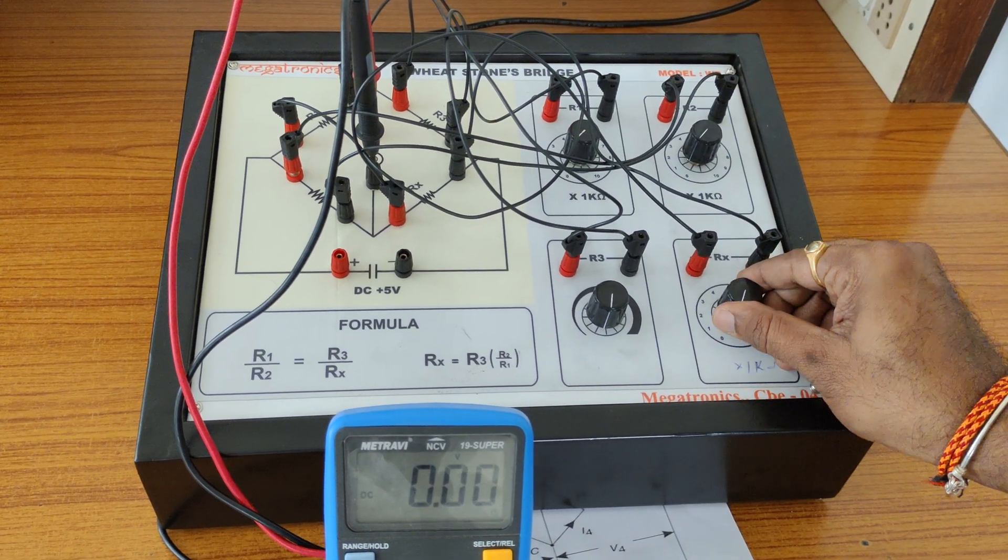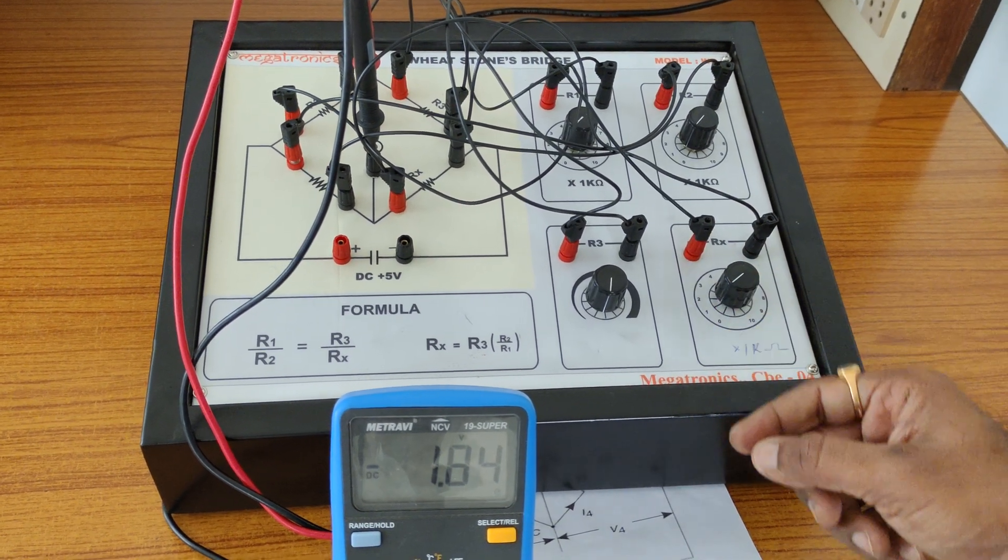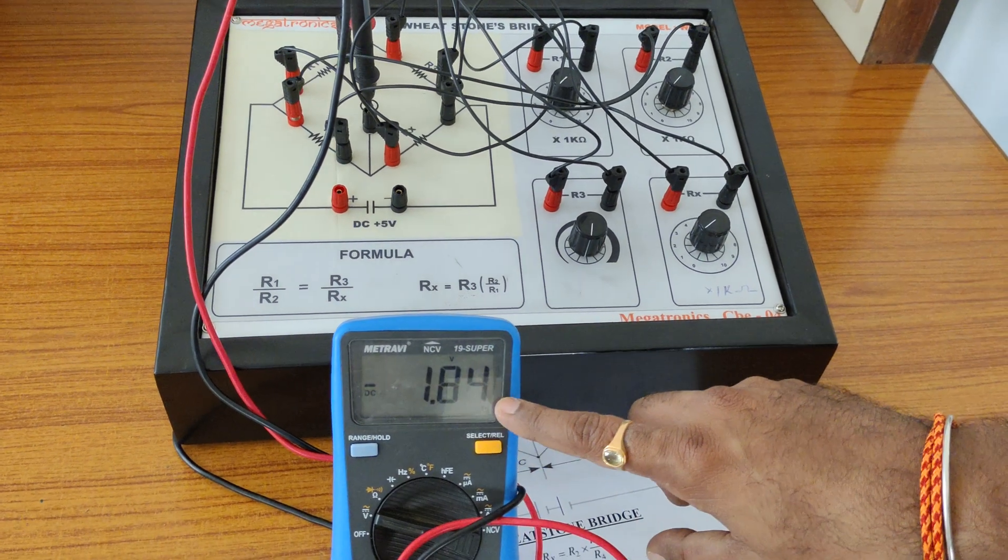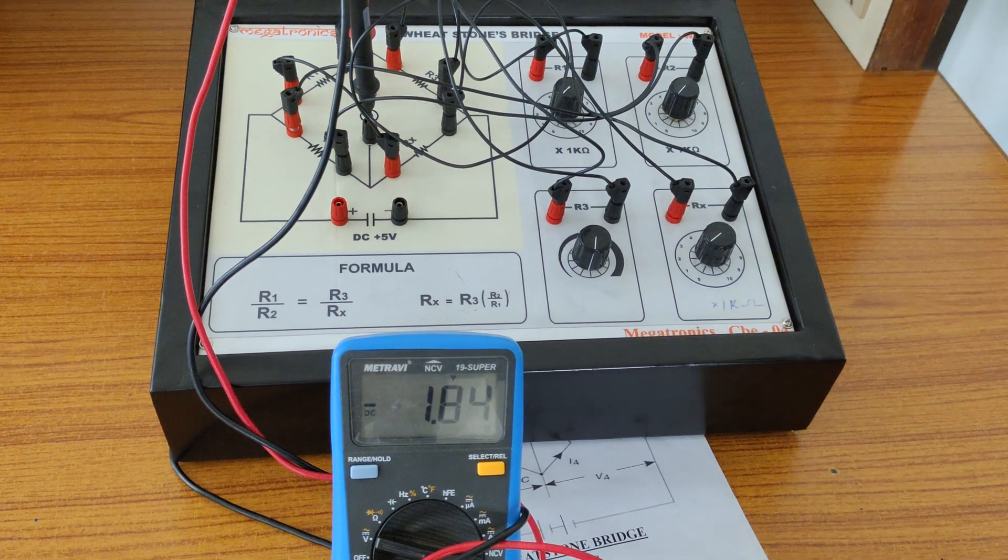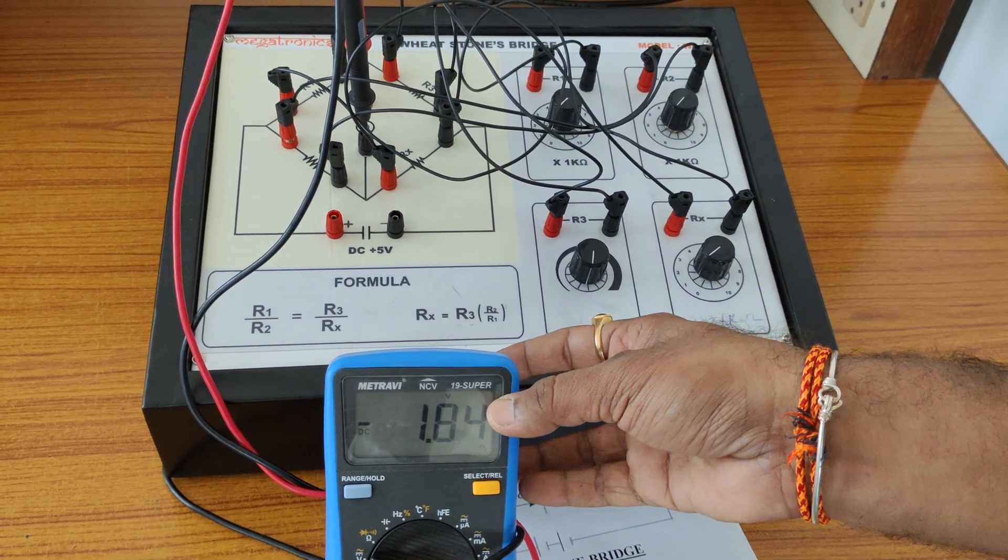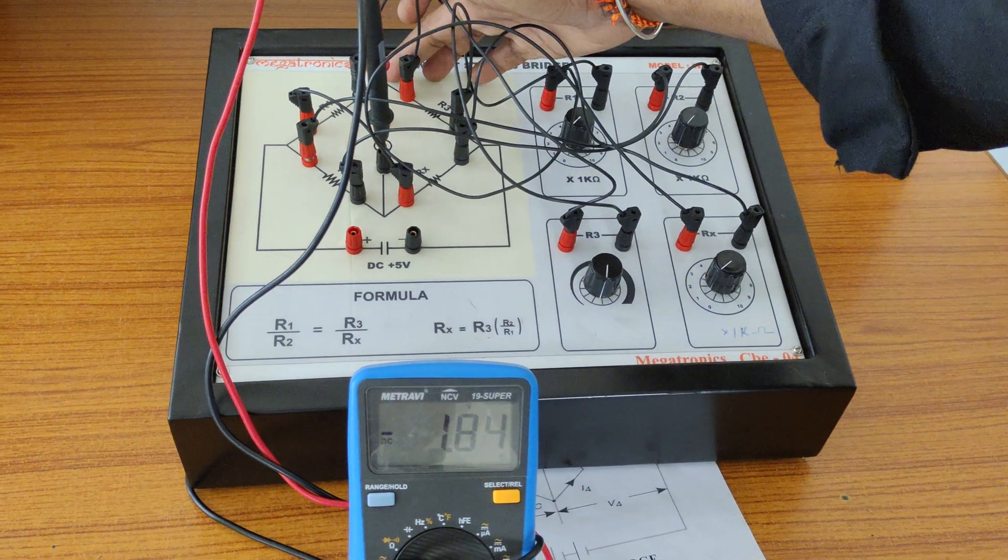But we observe one thing here: in order to bridge balance we observe there is some reading minus 1.84 volts. When the bridge is in balance condition, we observe the deflection galvanometer or this voltmeter will observe some reading as 0. Then only the potential across this point and this point are equal.